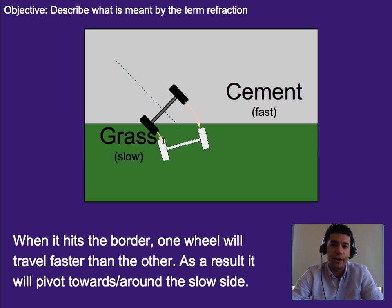So over the next second the one on the grass is only going to move a couple inches versus the one on the cement is going to move a couple feet. That's going to cause it to pivot or turn. So in this case we see it kind of bends towards the normal line or towards the vertical line because it's entering a slower material.